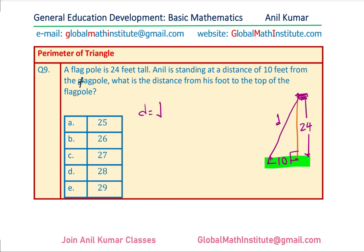Distance = √(10² + 24²) = √(100 + 576) = √676 = 26. So 26 feet is the right answer. We did a similar example earlier with sides 5 and 12 giving 13 — this is exactly twice that triple, making it also a Pythagorean triple: 10, 24, 26. Remembering this makes it much faster.